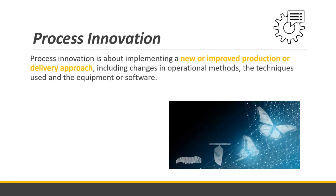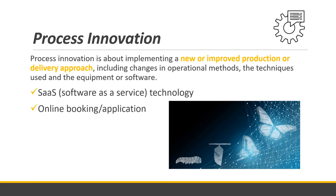Next is process innovation — implementing a new or improved production or delivery approach, including changes in operational methods and techniques, equipment, or software. An example is SaaS (Software as a Service) technology, and also online booking and application. Instead of receiving applicants face-to-face at the office, now you can do online booking or online application, and you only go there on the day of your scheduled interview or transaction.